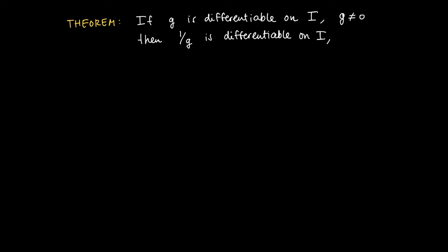If we know that a function is differentiable on some interval and stays away from zero, then we can also show that 1 over the function is differentiable on this interval.